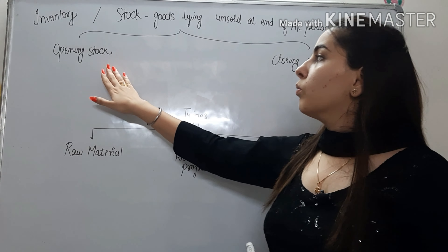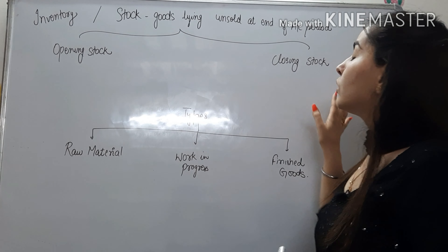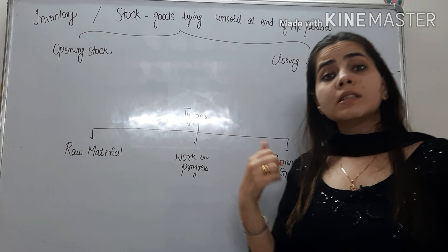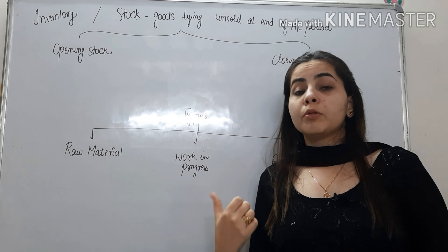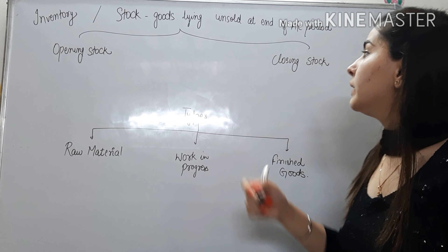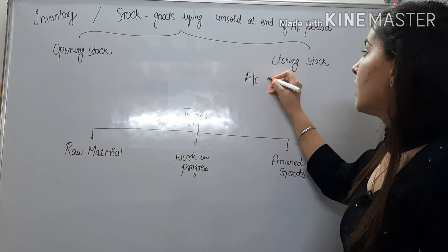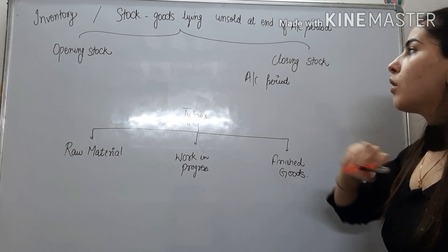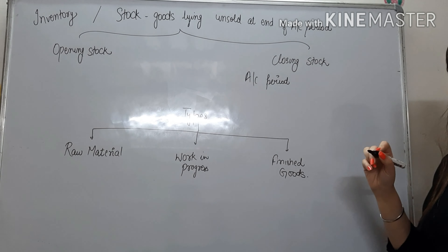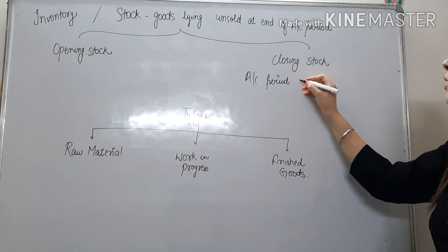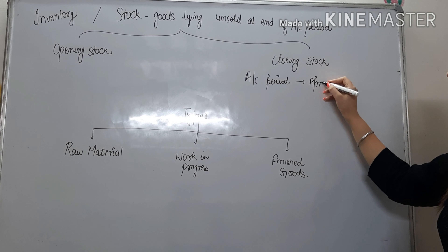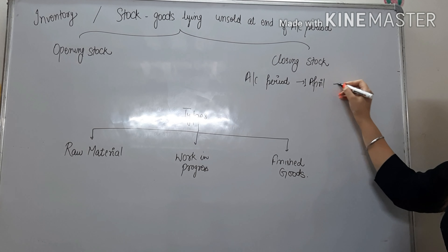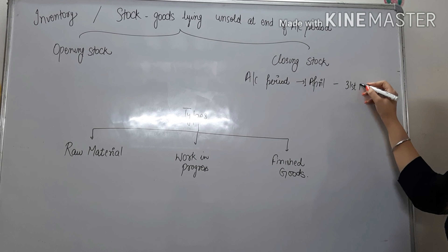So stock do tarah ka hai: opening stock and closing stock. Before understanding this concept, you should know the meaning of accounting period. Aap sabhi ko pata hoga, India mein accounting period follow hota hai from April to March. Matlab, it starts from 1st April and it ends on 31st March.